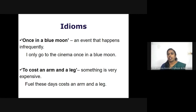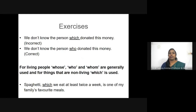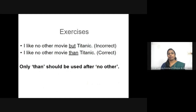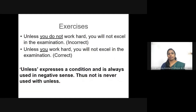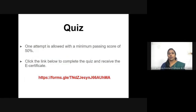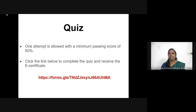I have given a few examples in the next two slides. Now we have exercises — a few questions with answers for you to go through to have a clear understanding of the concepts taught. We have come to the end and it is time for you to take up the test. One attempt is allowed with a minimum passing score of 50 percent. Click the link below to complete the test and you will receive an e-certificate. All the very best.